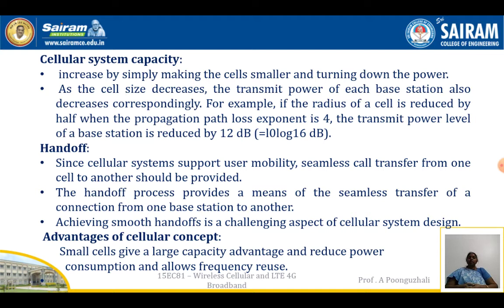If the radius of the cell is reduced by half, then the propagation path loss component becomes 4, so the transmit power level of the base station is reduced by 12 decibels.